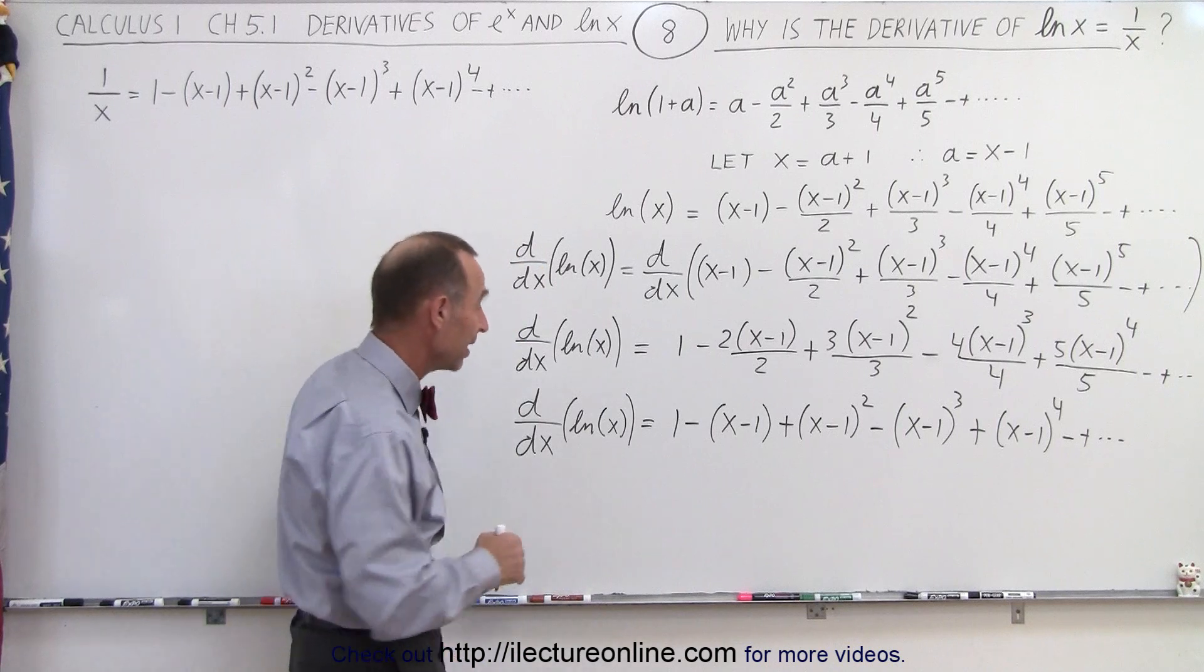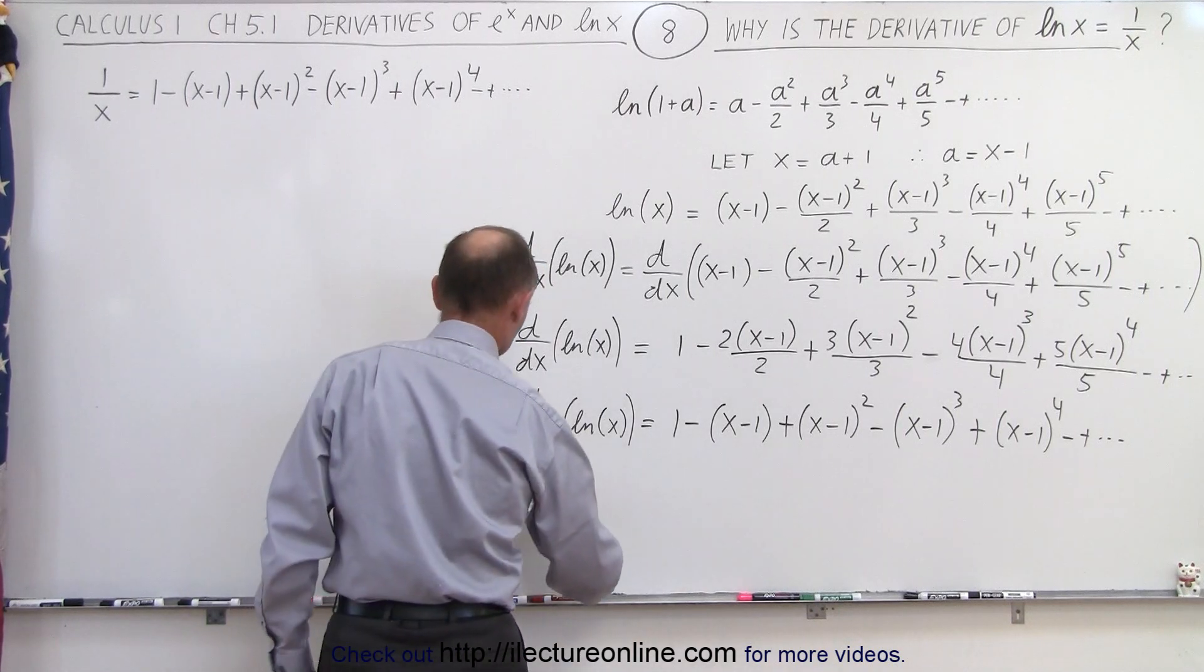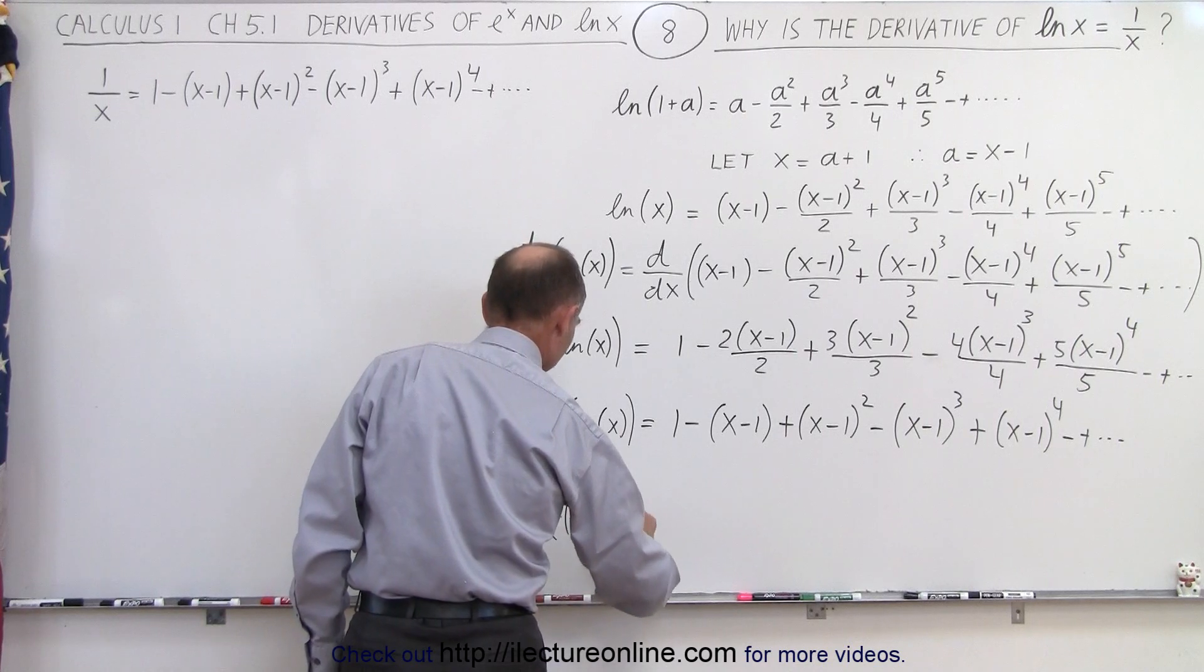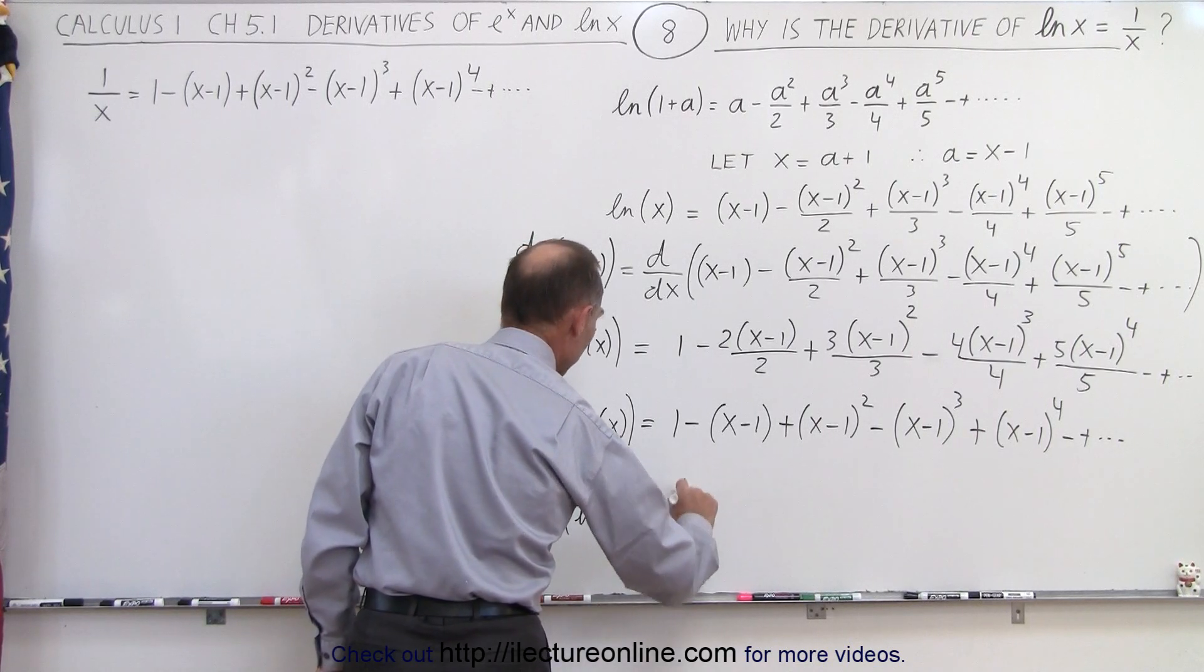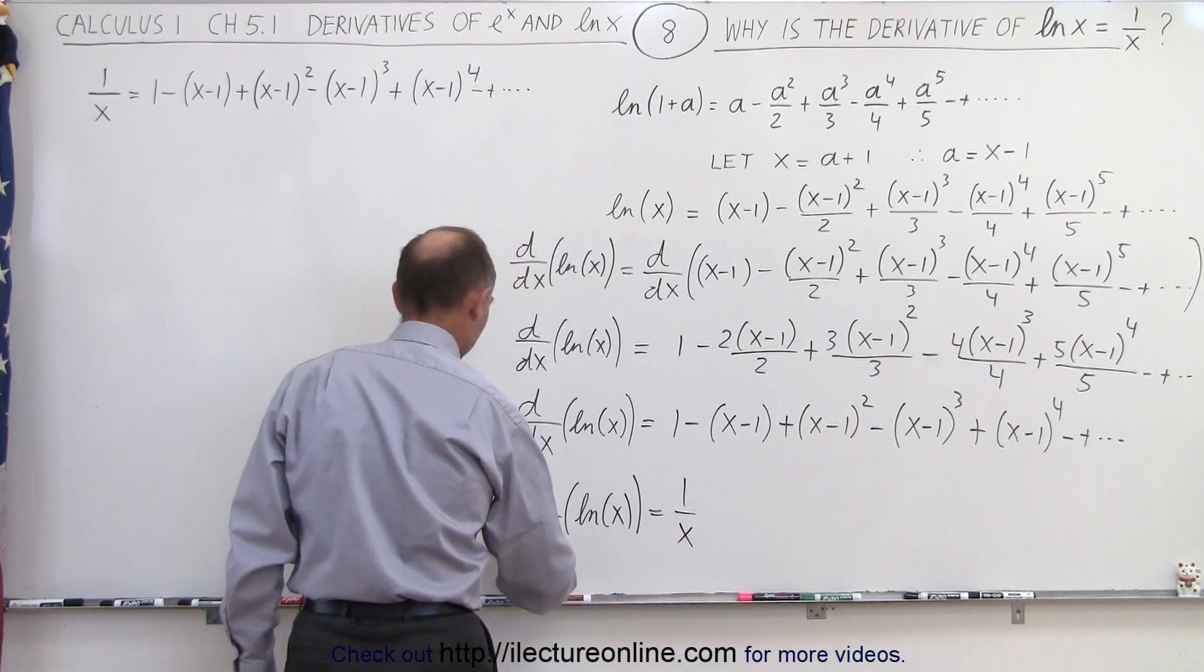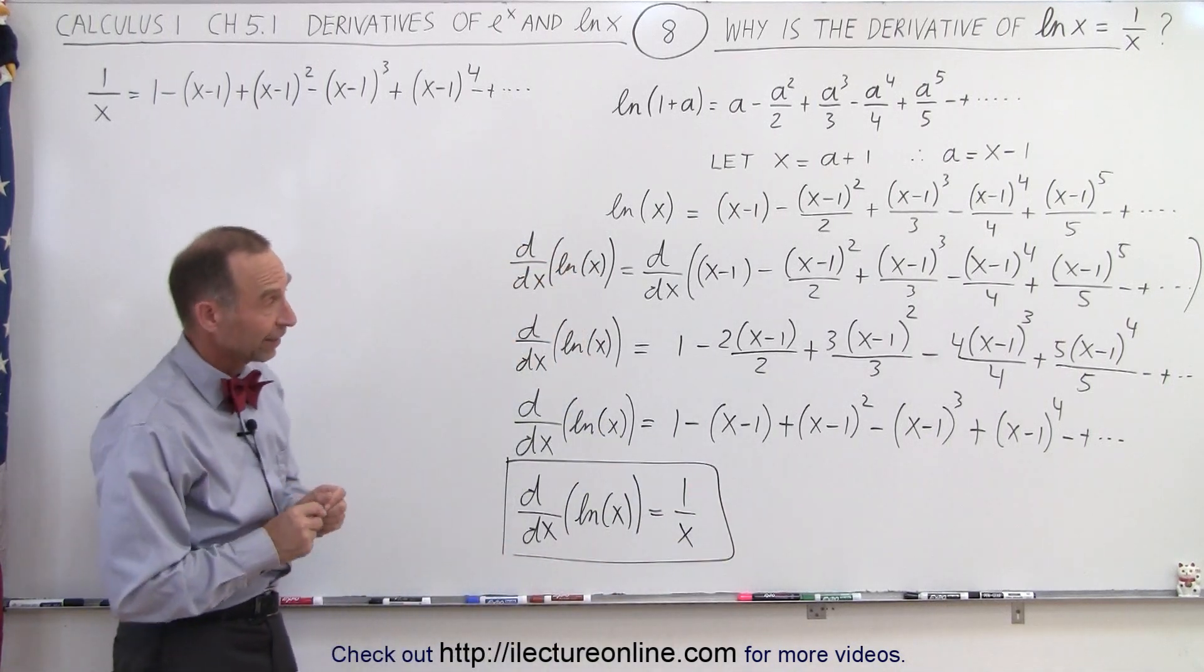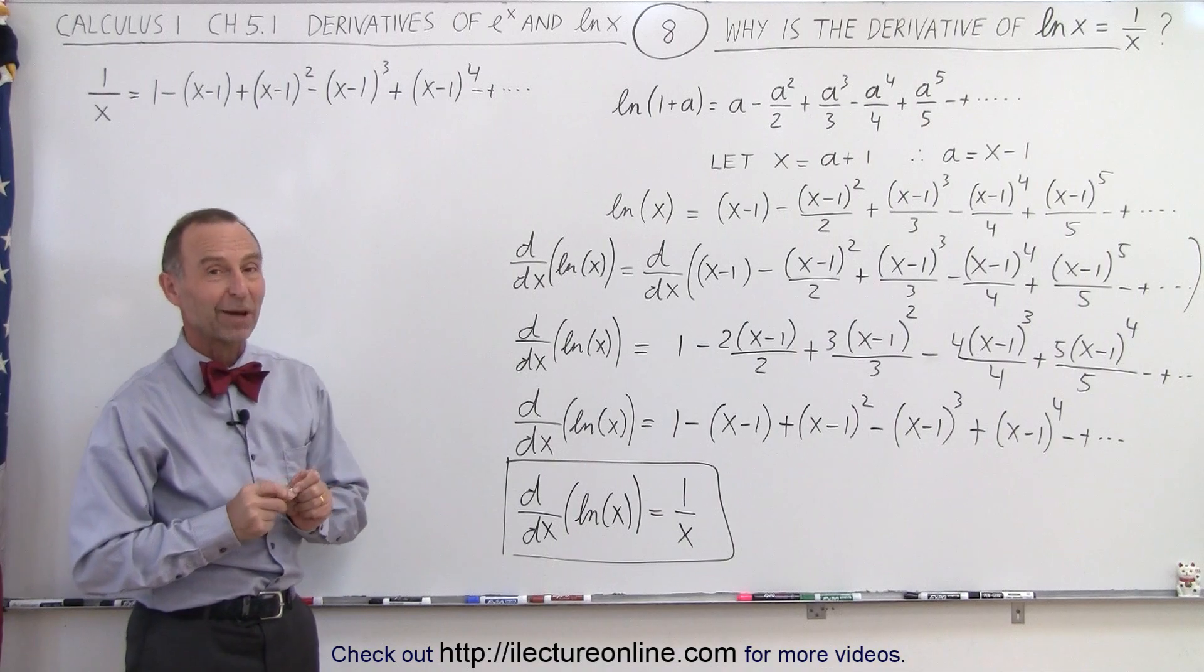It looks like it's the exact same thing, and therefore, we can conclude that the derivative, the d dx of the natural log of x, is indeed equal to 1 over x. And so here, we have proof that that's indeed the case. That's how it's done.